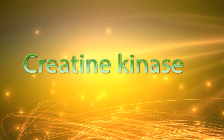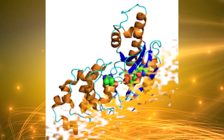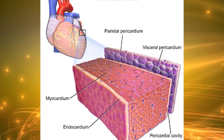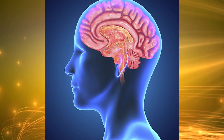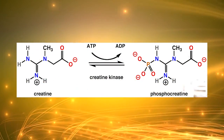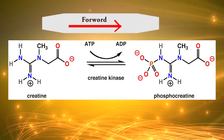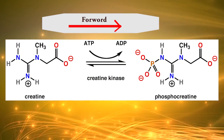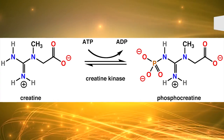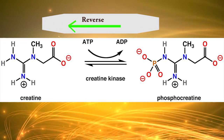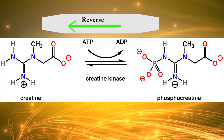Creatine kinase enzyme activity is greatest in striated muscle, heart tissue, and brain. Creatine kinase catalyzes the conversion of creatine and utilizes ATP to create phosphocreatine and ADP. This creatine kinase enzyme reaction is reversible, and thus ADP can be generated from phosphocreatine.